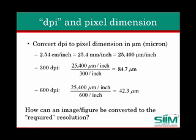To get an idea of the relationship between dpi and pixel dimension, one can use straightforward algebra and conversion constants. There are 2.54 centimeters per inch, equal to 25,400 microns per inch. This value, divided by the resolution in dpi, gives a corresponding dimension in microns. For instance, at 300 dpi, the corresponding resolution is 84.7 microns, while at 600 dpi, the corresponding resolution is 42.3 microns. Note the inverse relationship between resolution in dpi and resolution in microns.